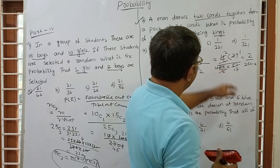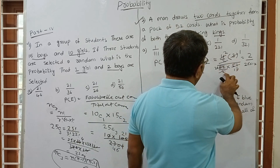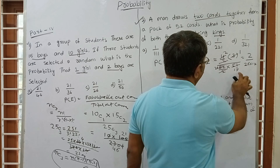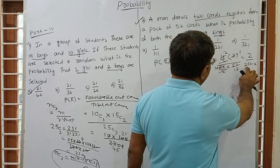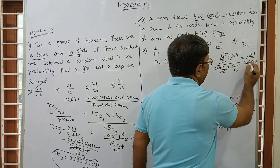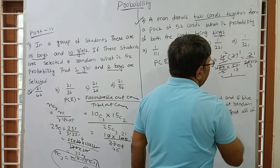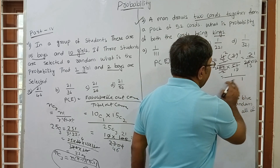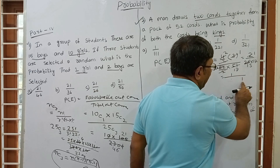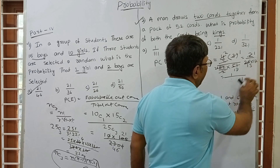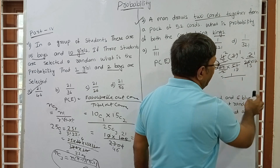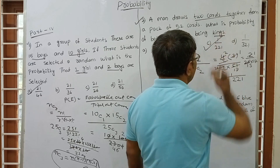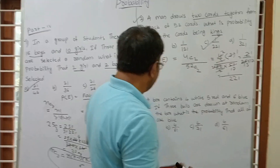After cancelling the 2s: numerator 4 × 3 = 12, denominator 52 × 51. Simplify: 4/52 = 1/13 and 3 stays, with 51 in denominator. So 3/51 = 1/17. Therefore the answer is 1/(13 × 17) = 1/221. The correct answer is 1/221.